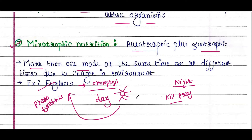That means Euglena are very clever organisms — they undergo both autotrophic as well as zootrophic nutrition. Hope you understood my lecture, thank you.